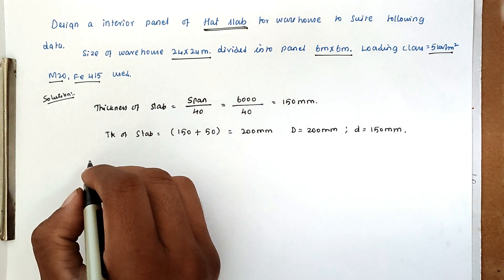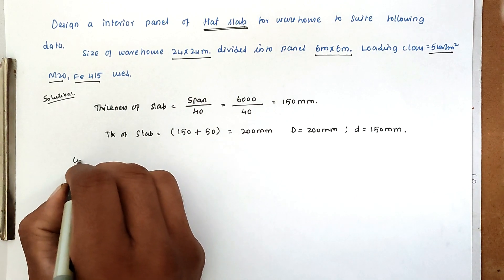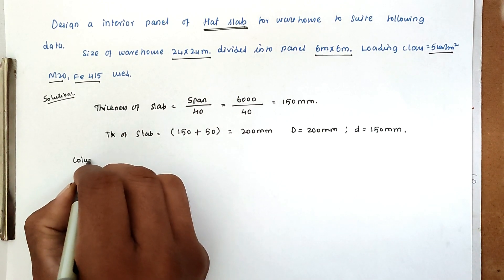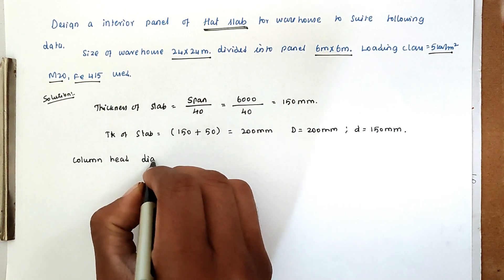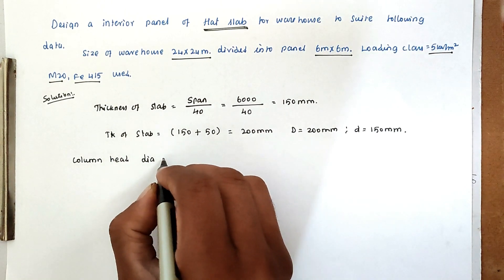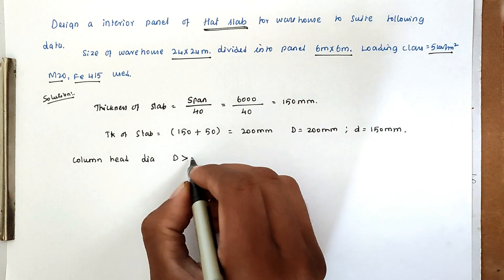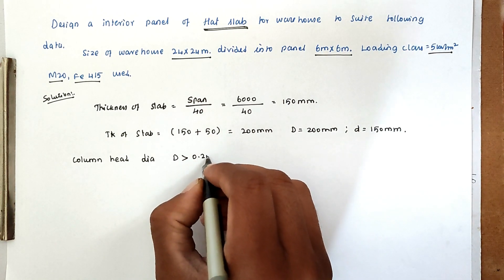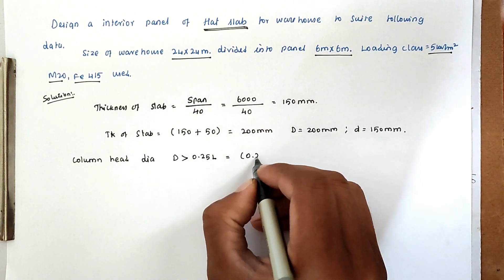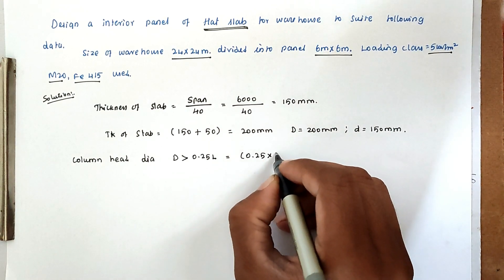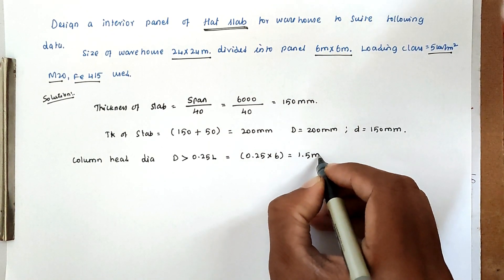Now for the column head diameter: D must be greater than 0.25 L. Taking 0.25 into 6 meters gives 1.5 meters. So the column head diameter is 1.5 meters.